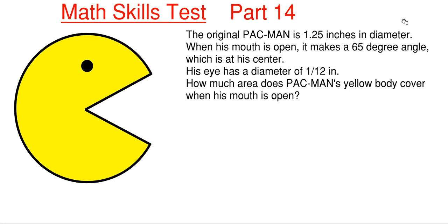So this will be the 14th part in our series here, and we have Pac-Man on this one. So the original Pac-Man is 1.25 inches in diameter. When his mouth is open, it makes a 65 degree angle to which the center is his mouth's origin point. His eye has a diameter of 1/12th of an inch, and we need to determine how much area does Pac-Man's yellow body cover when his mouth is open at this 65 degree angle so that he can eat.